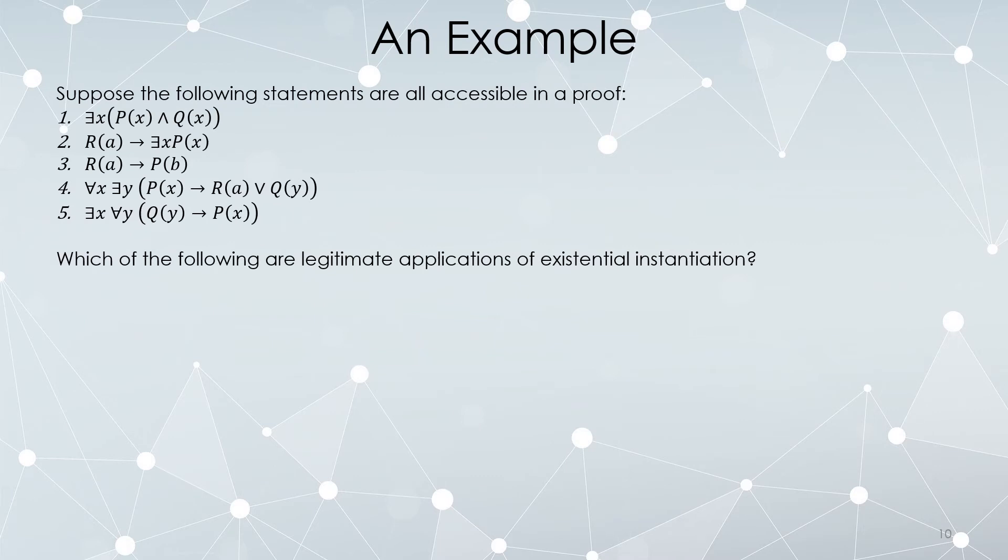So suppose you can access all the following in a proof. You're doing a two column proof and all of these exist as lines and they've already been justified.